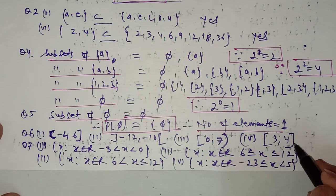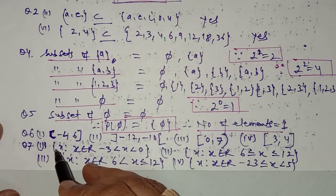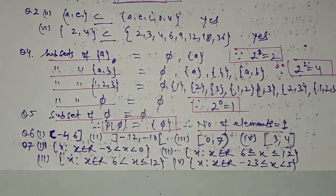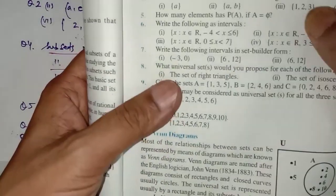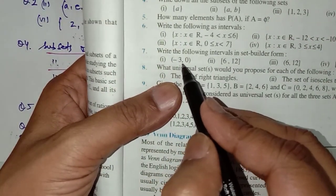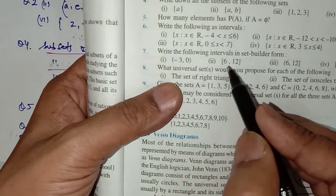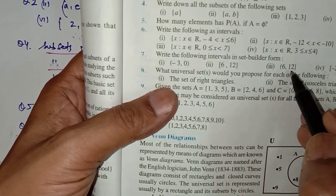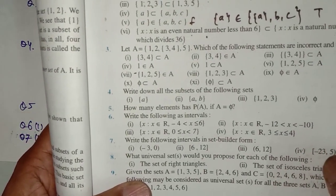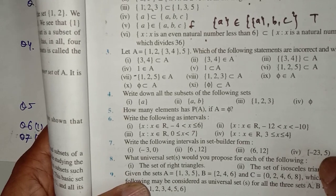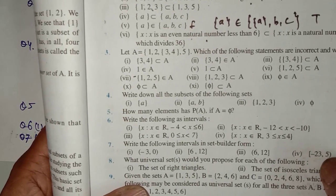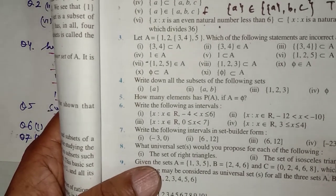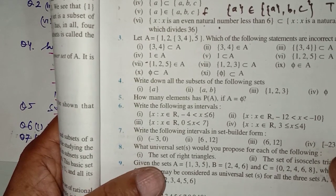In question number 7, the roster form of the interval is given. Minus 3 and 0 both lie in the open interval, so x is greater than minus 3 and less than 0. In another part, x is greater than or equal to 6 and less than or equal to 12. In another, x is greater than 6 and less than or equal to 12. In the last, x is greater than or equal to minus 23 and less than 5. In set builder form, write: x such that x belongs to real numbers and the respective condition.